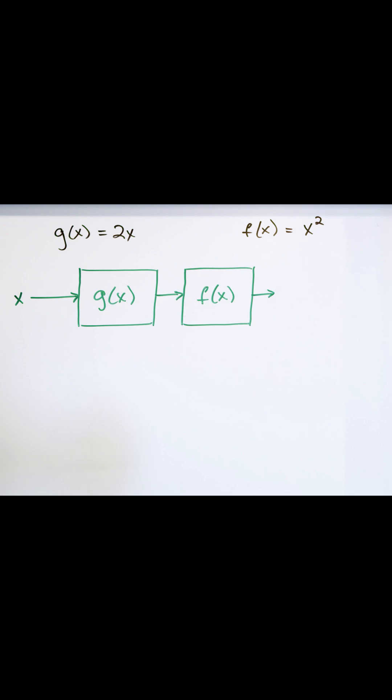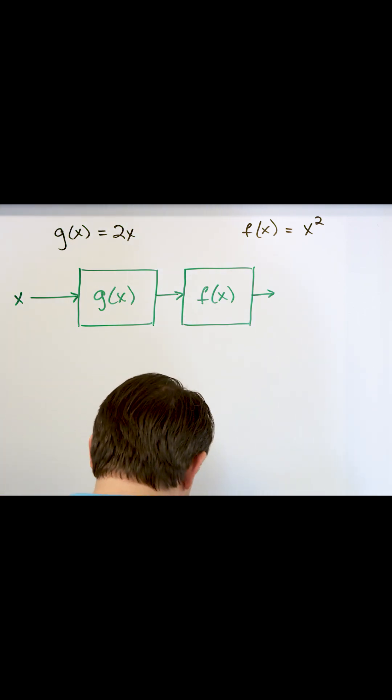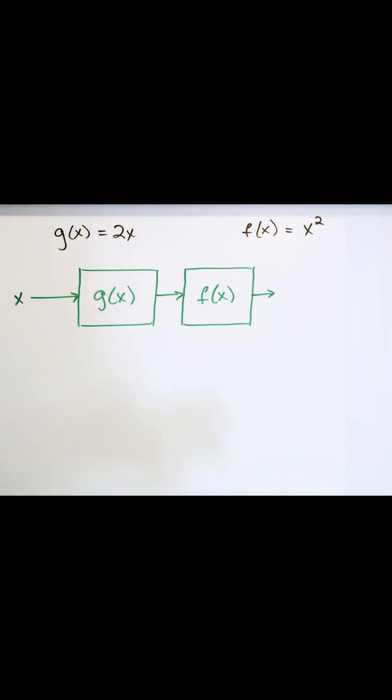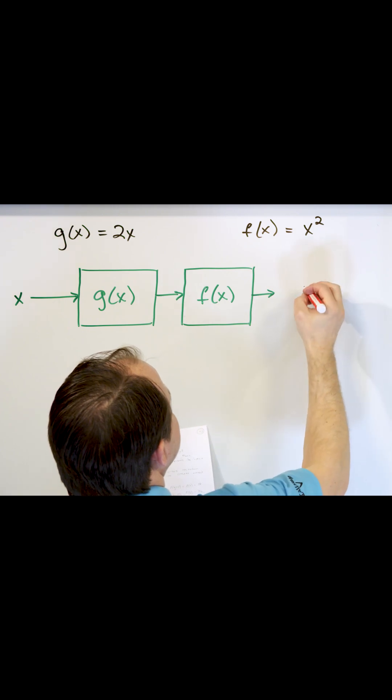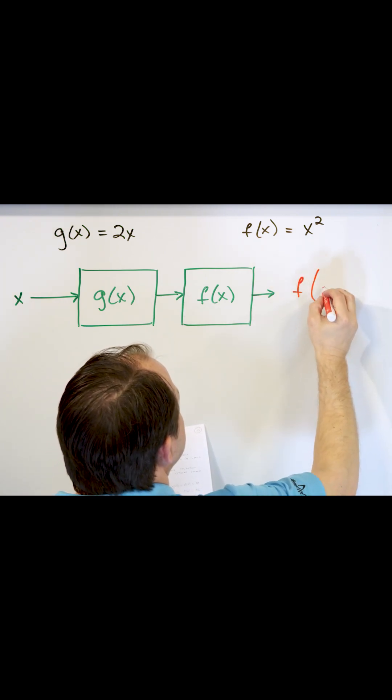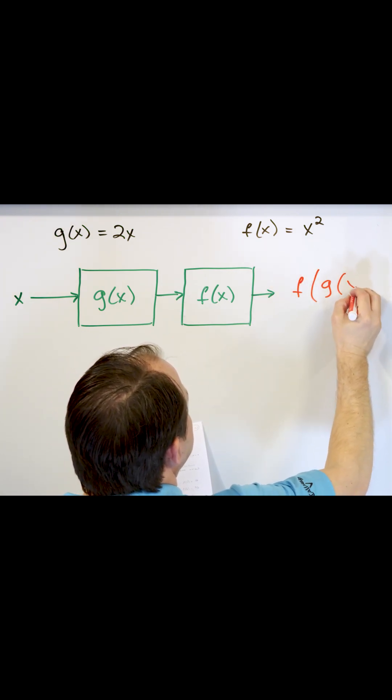And then this is the part that usually confuses students, but shouldn't confuse you now. The output of this thing is written like this, f of g of x.